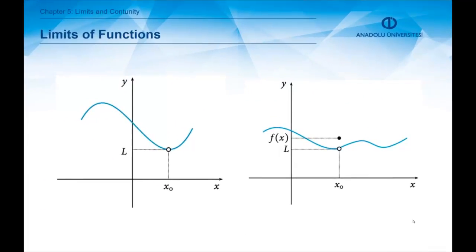Therefore, from these two examples, we can immediately see that the limit of the function may exist at a point x equals x₀. However, the function may not be defined or may have a completely different value at this point.